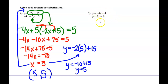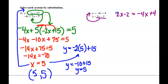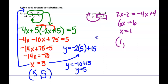I put this one on here because it's a slightly different setup. If they're both equal to y, we can just set them equal to each other. So it would say 2x minus 2 equals negative 4x plus 4. You're replacing one y with what the other equals. Adding 4x gives 6x, and adding 2 gives x equals 1. Then plugging back in: y equals 2 times 1 minus 2, which is 0. So the ordered pair is 1, 0.